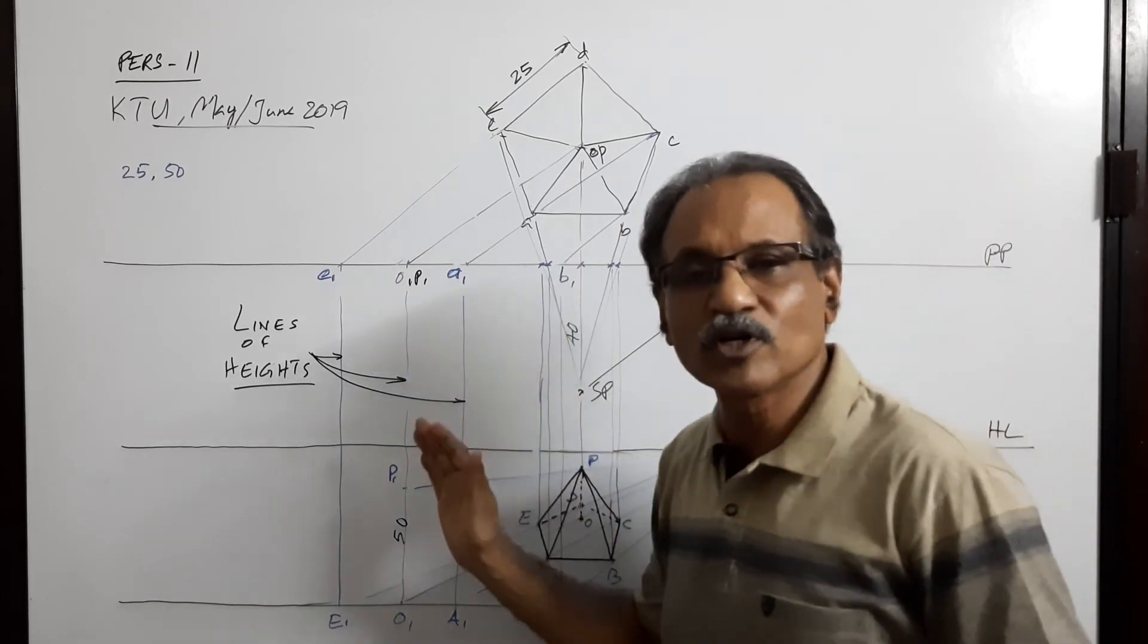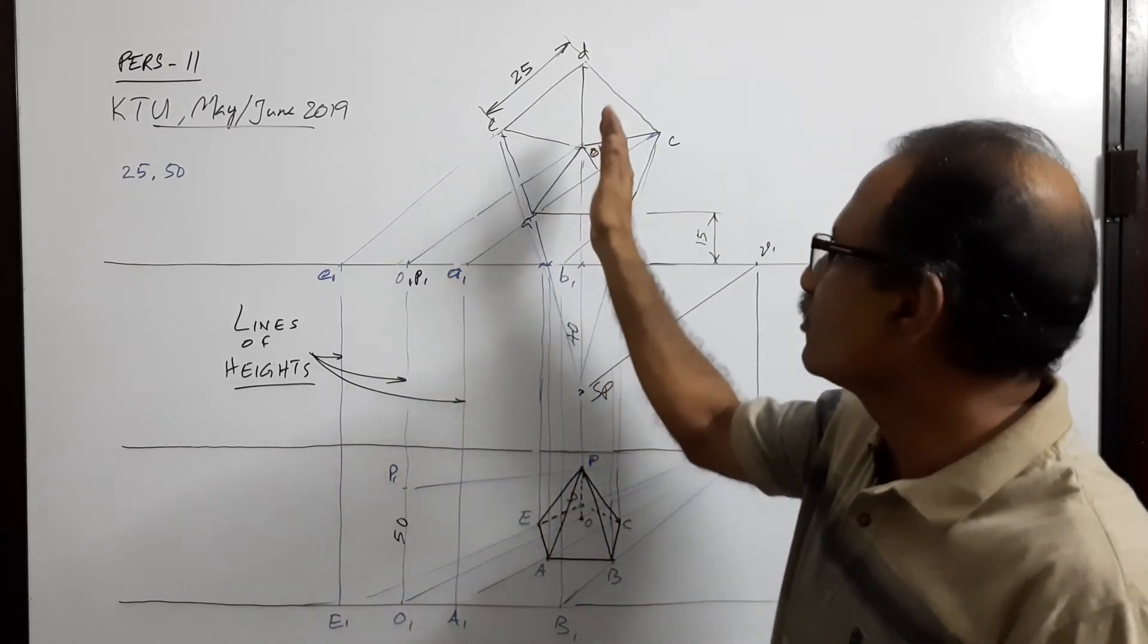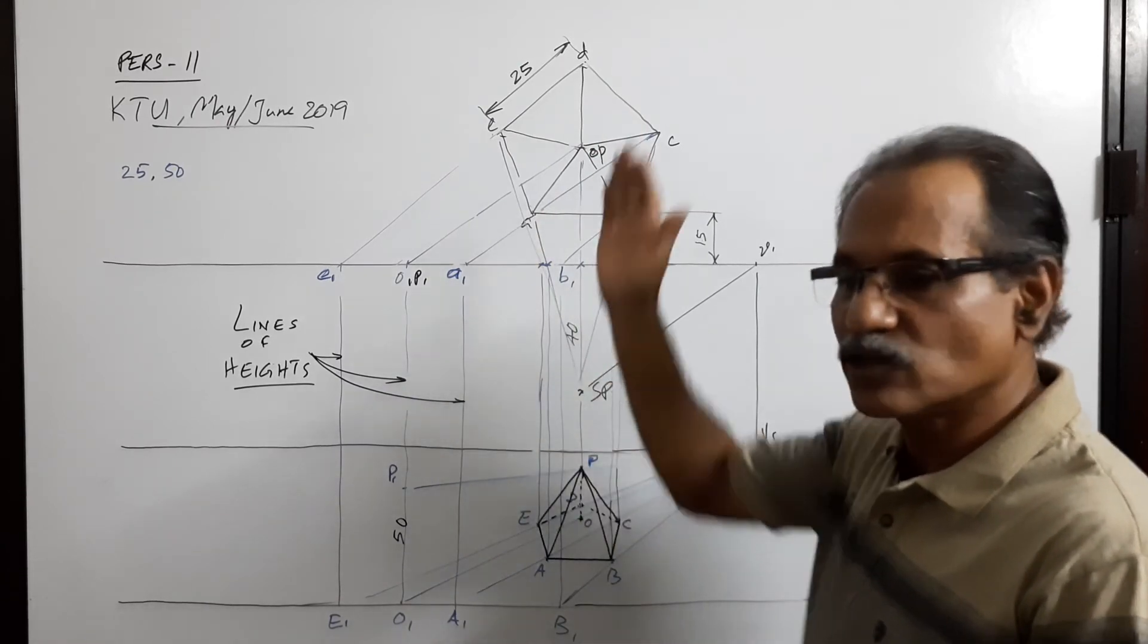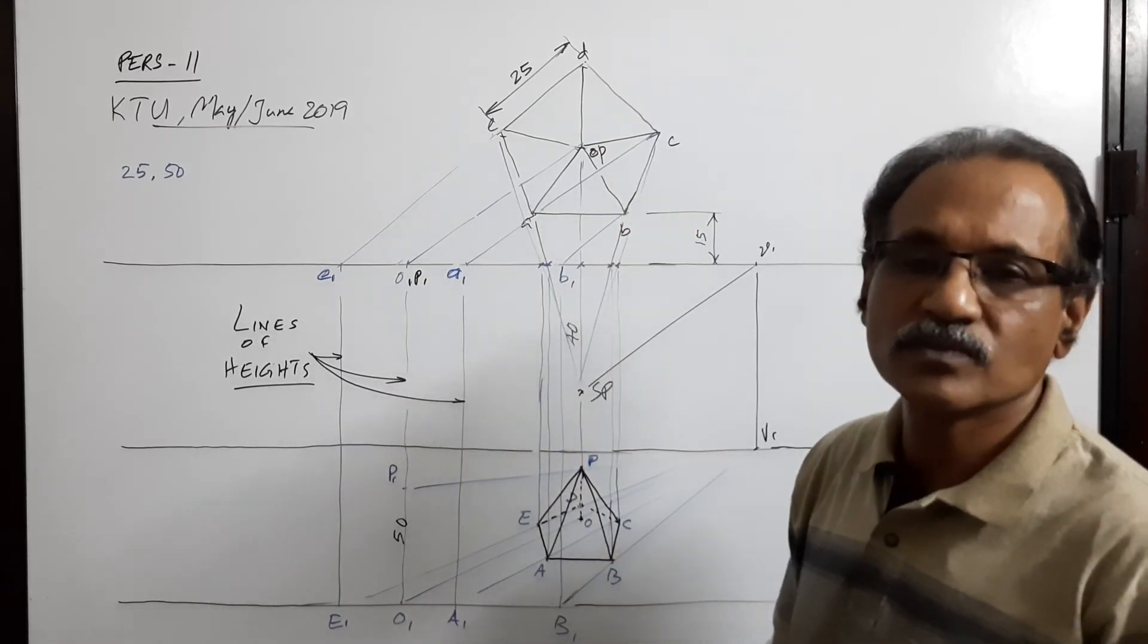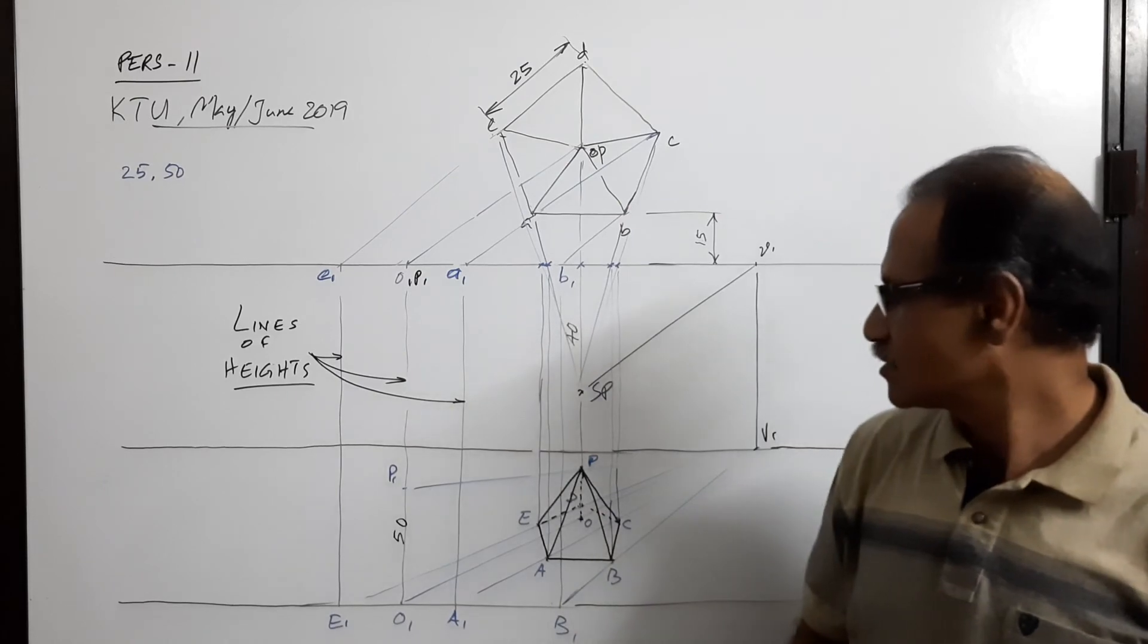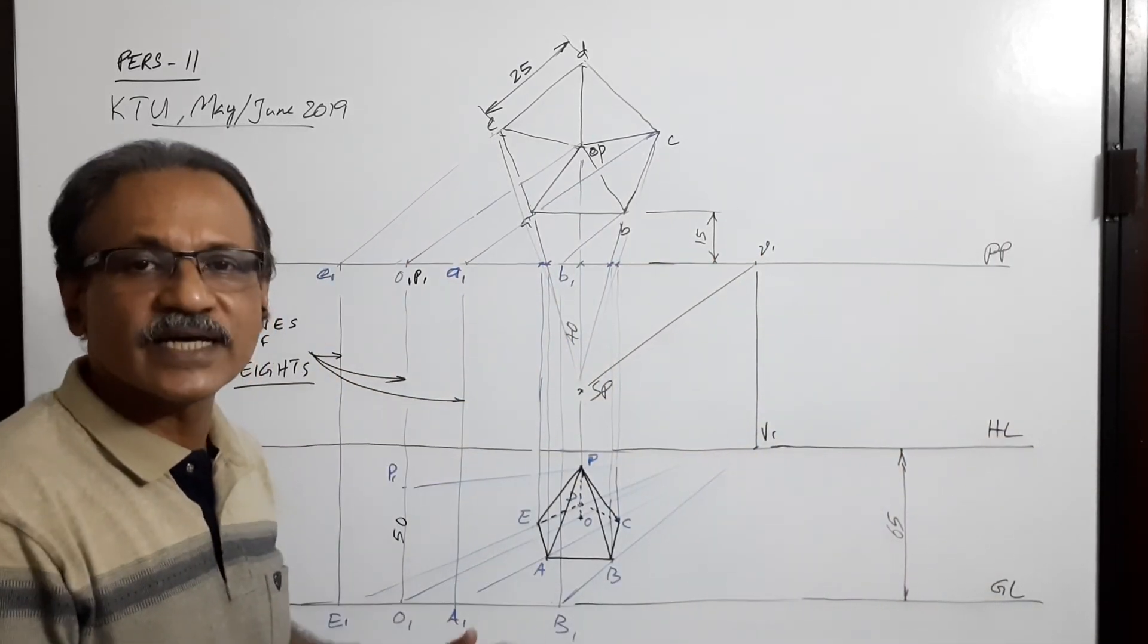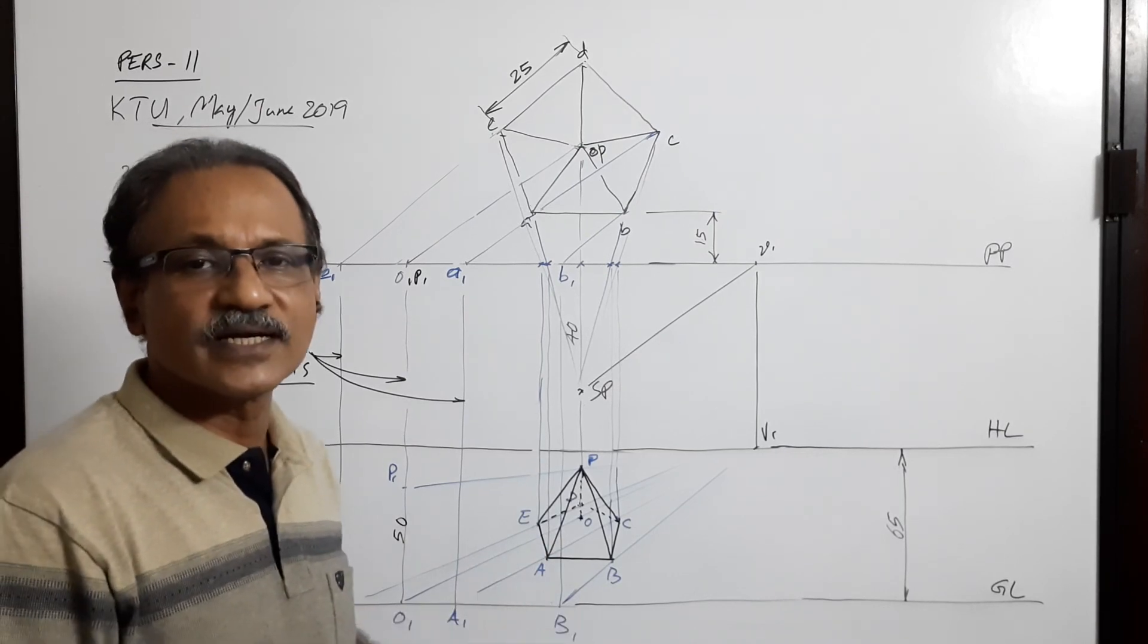Visual ray method is not possible because if you use visual ray method you will not get the apex. It will not intersect, it will coincide. That's the problem. I hope you understand. You have to draw this under exam. Thank you.